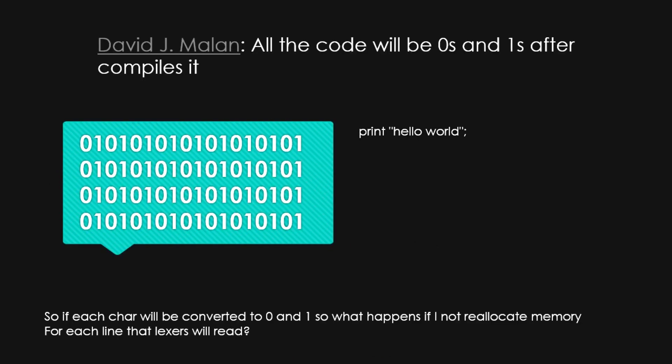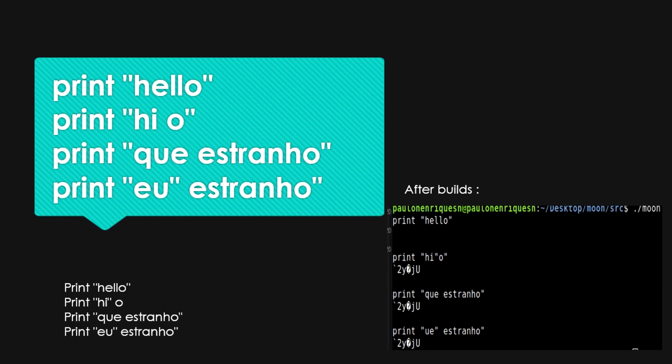As David Malan says, all the code will be zeros and ones after it compiles. So if each character is converted to zeros and ones, what happens if you don't reallocate memory for each line that gets read? This is what happens: when you say 'print hello' then 'print hi', the memory will compact the previous content, and this does not clear the array.